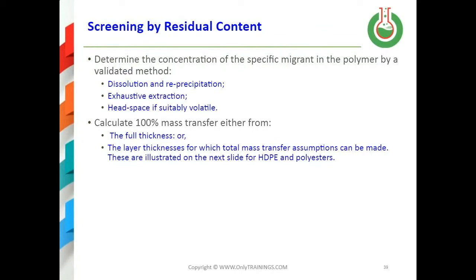Screening by residual content: you determine the concentration of the migrant in a polymer by some validated method — for example, solution and re-precipitation, which works with polystyrene; exhaustive extraction, where you keep extracting until no more is extracted; or headspace analysis if your analyte is suitably volatile.